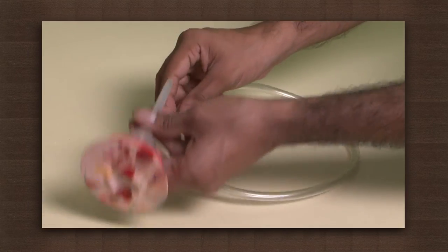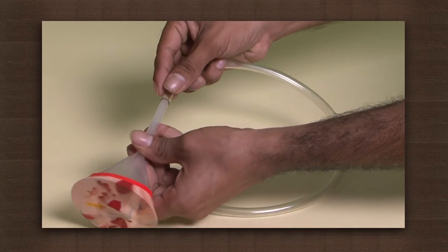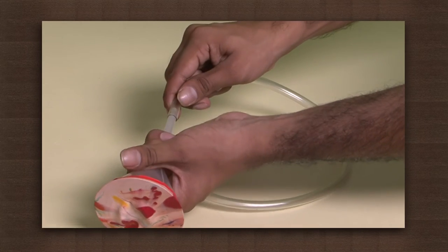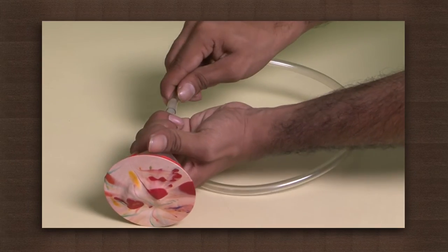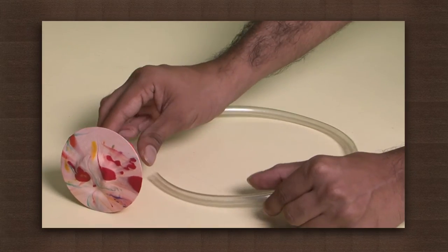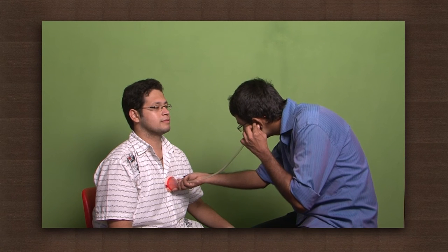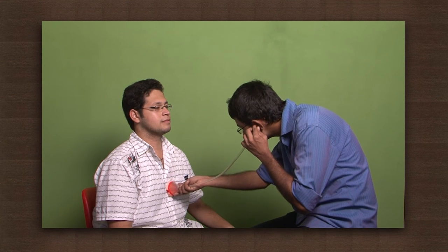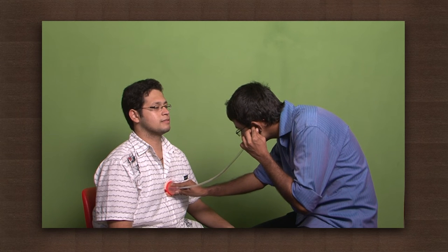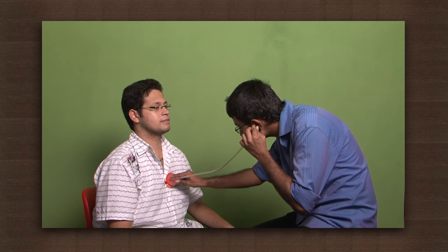Now fix the rubber tube to the stem of the funnel. Now keep the mouth of the funnel on your friend's chest and the end of the tube in your ears. You will be able to hear his heartbeats. Count the number of beats per minute.